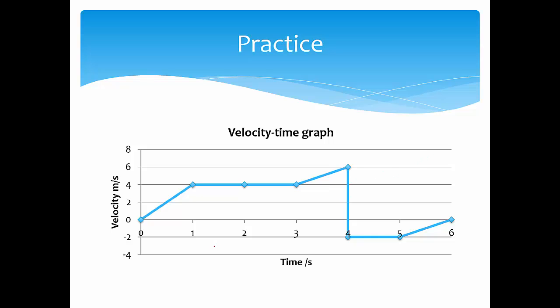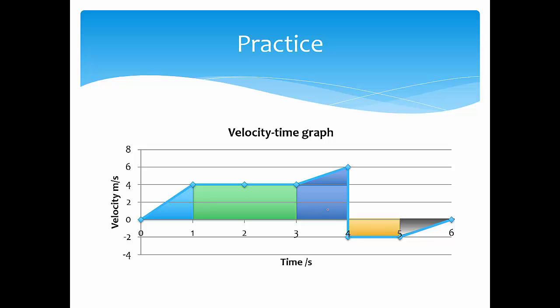Here is a practice question. The object starts from 0, rises to 4, remains flat at 4, increases to 6, then changes to a negative velocity of 2, maintains negative 2, and drops back to 0. Find the displacement from t=0 to t=6 seconds. Simply break it into sections 1, 2, 3, 4, and 5. If you add them all up, you can find the total displacement.